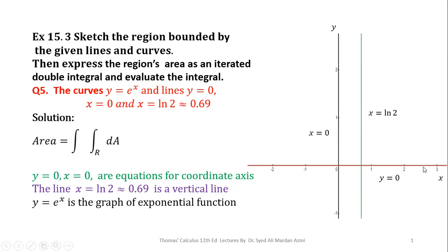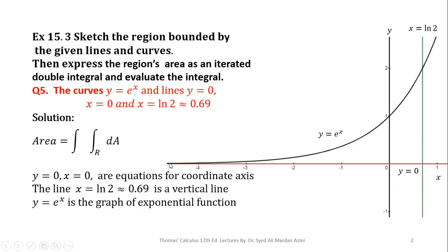In the next step we will plot them. You can see this is my x-axis, this is my y-axis, this is the origin. I have marked the x-axis in red, the y-axis in black, and the line x = ln(2) in green. Now I am going to plot y = e^x — this is the graph of y = e^x, the exponential function.